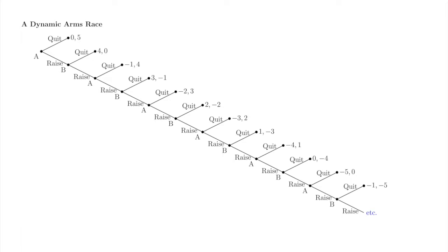The game ends if and when one of the two players selects quit at some move. But given the description of the game, the game in fact has infinitely many moves. If each player raises at every move, the game will not end. The 'etc.' at the bottom of the tree indicates that the game need not end, and the tree continues in the pattern shown. An immediate consequence of infinite depth is that to specify a strategy, we must specify infinitely many actions. The other important consequence is that we need to specify payoffs in the event that the game does not end. In this game, if each player raises at every move, we say that each player's payoff is negative infinity, since each player raises infinitely many times at a cost of $1 per raise.